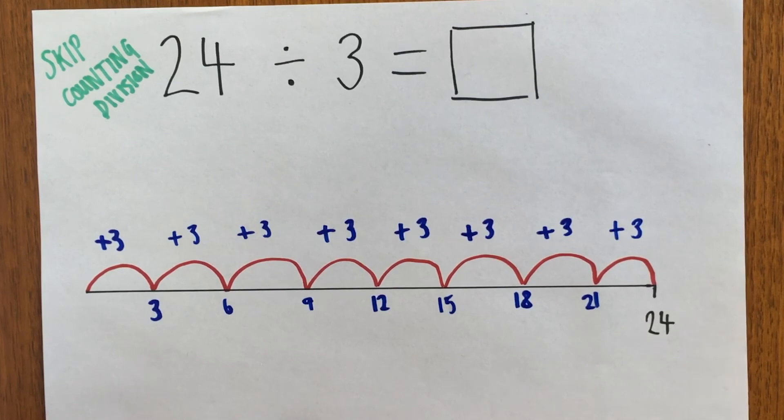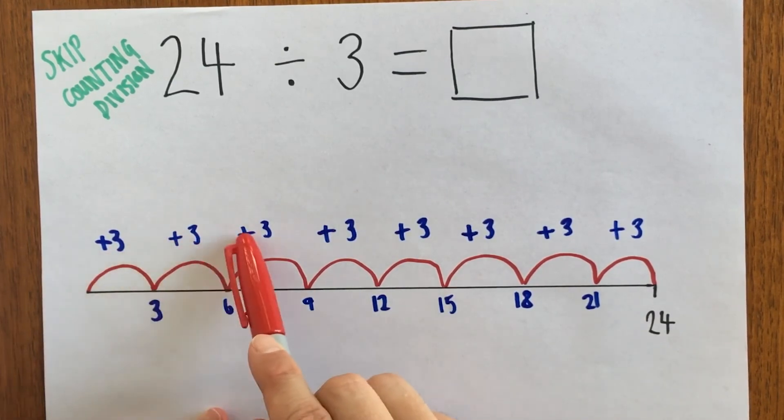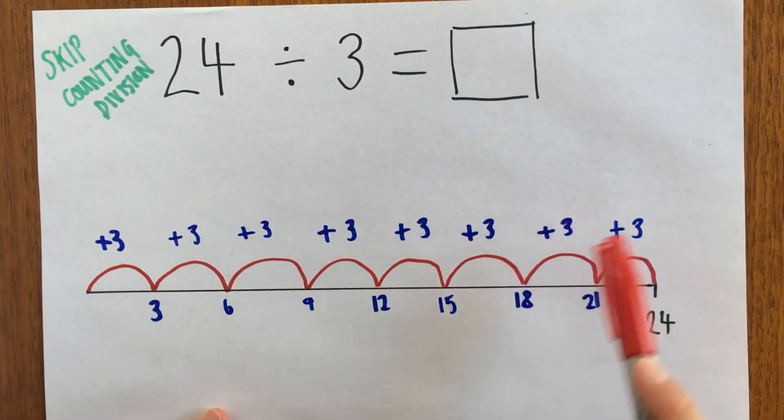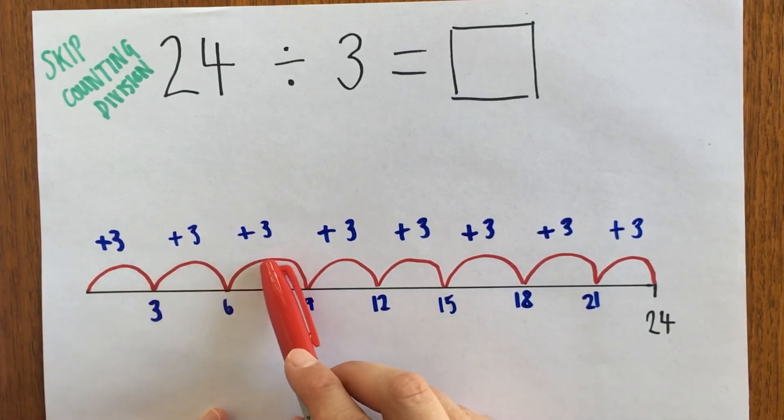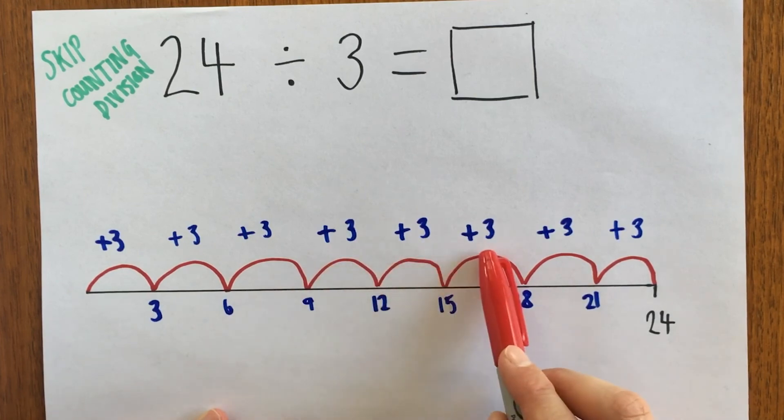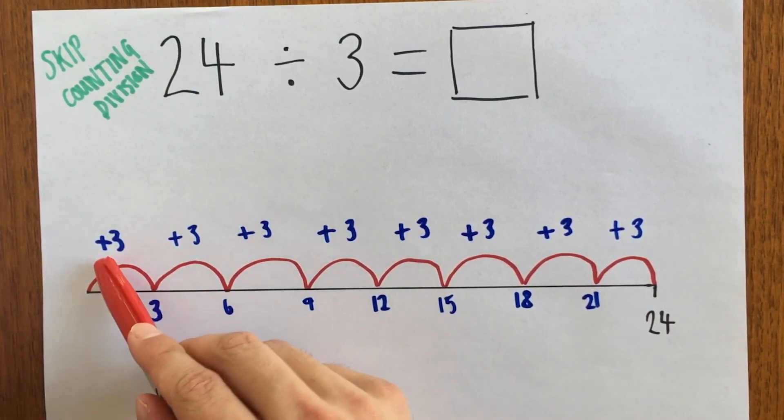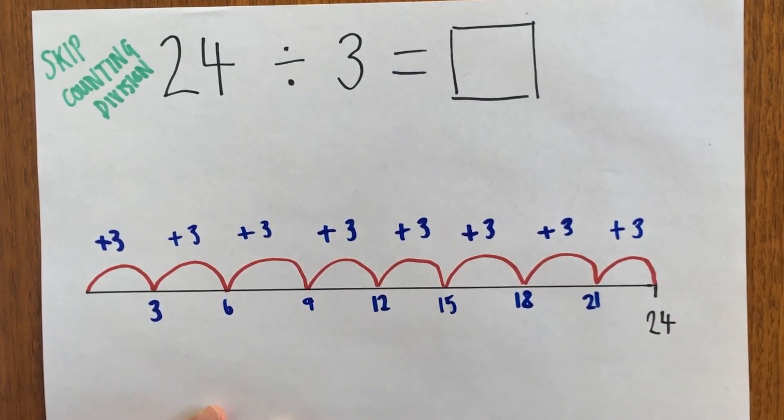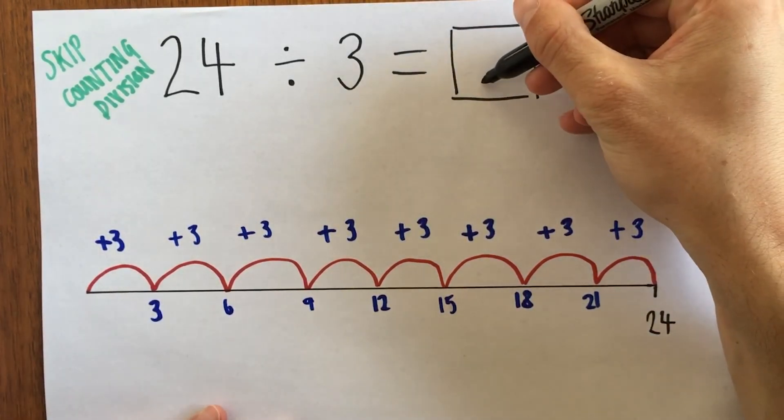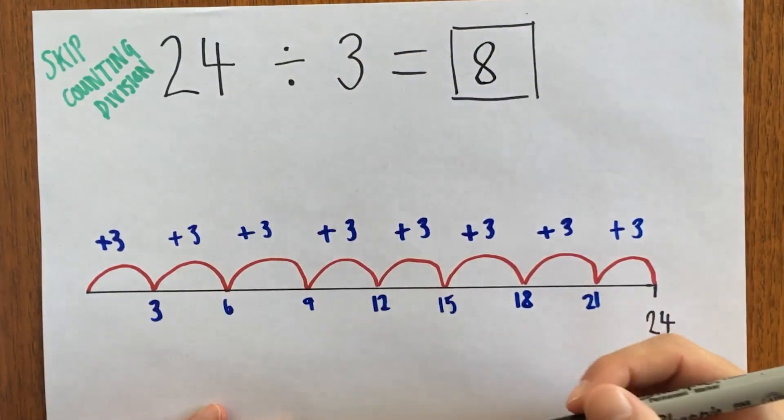So then to work out how many times 3 has been added, we count the jumps: 1, 2, 3, 4, 5, 6, 7, 8. What that means is that 3 goes into 24 eight times because we were able to make 8 jumps. So 24 divided by 3 equals 8.